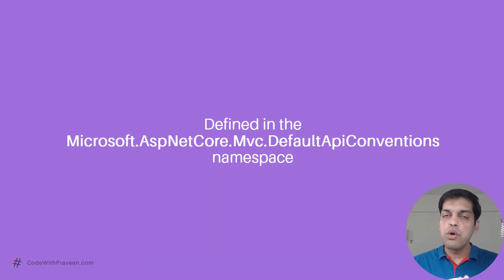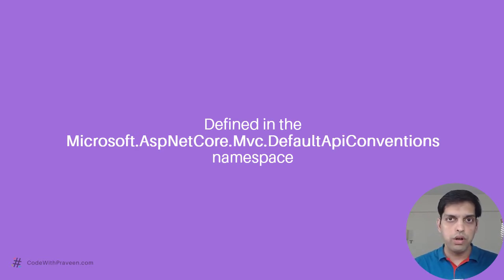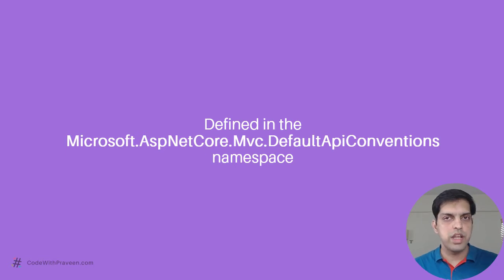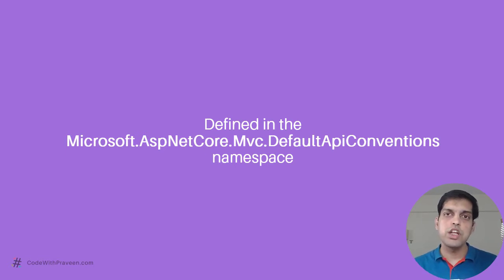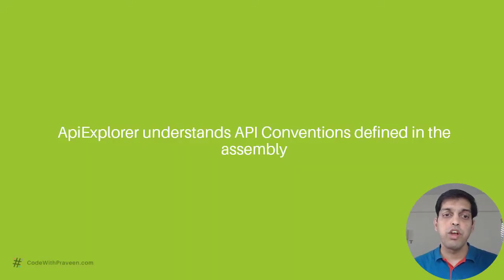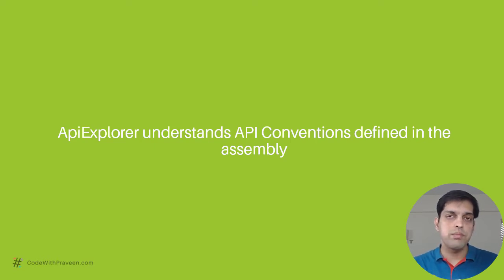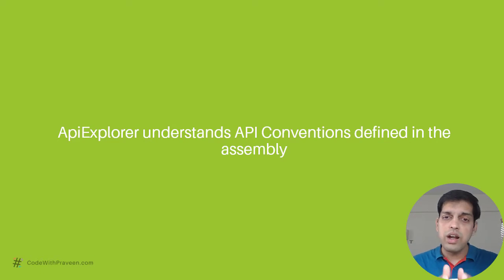Note that these conventions are defined in the Microsoft.AspNetCore.Mvc.DefaultApiConventions namespace, so you need to add it to the respective controllers that need to include these API Conventions. The API Explorer, which is the real engine behind creating OpenAPI documentation, understands these API Conventions defined in the assembly.